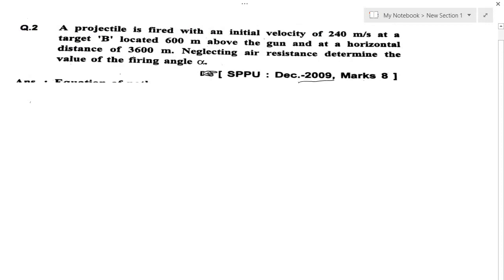A projectile is fired with an initial velocity of 240 meters per second. Let us select the x-axis and y-axis. The projectile has been fired with an initial velocity of 240 meters per second at a target B located 600 meters above the gun. Let us assume this as the gun and the target B located here.